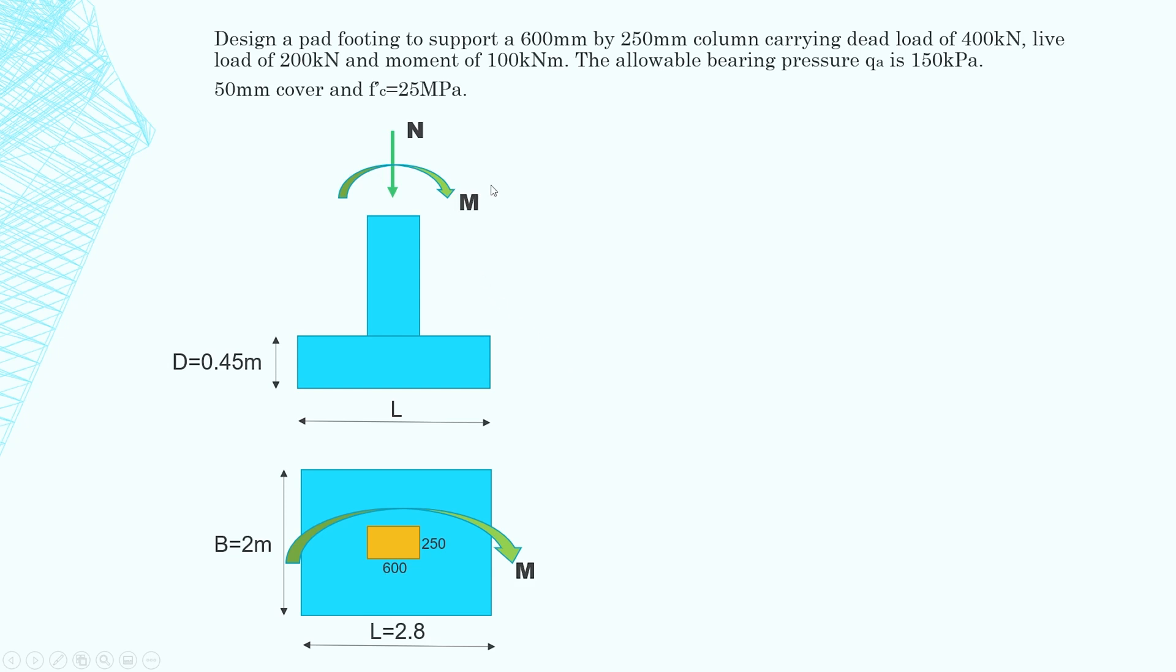So the first thing we need to do is determine the footing size and the axial load is the dead load plus the live load unfactored. We don't factor the loads to find the footing size. Moment equals force times distance. Therefore eccentricity, which is the distance, is equal to moment divided by force. So 100 divided by 600, 0.167.